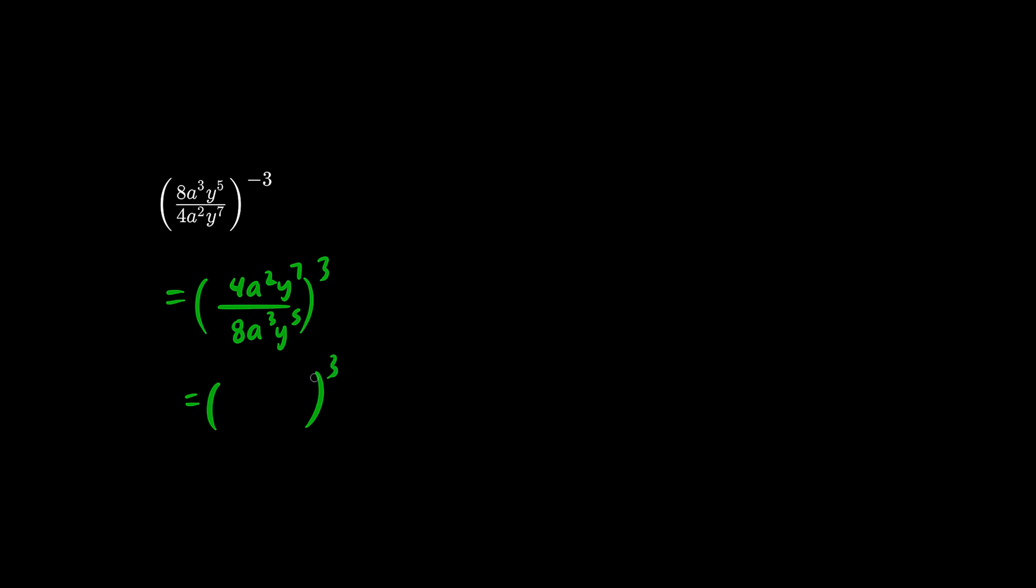We now simplify the inside. 4 divided by 8 becomes 1 half. a squared over a cubed becomes a on the bottom. And y7, y5, we have y squared on the top. 7 minus 5 is 2.